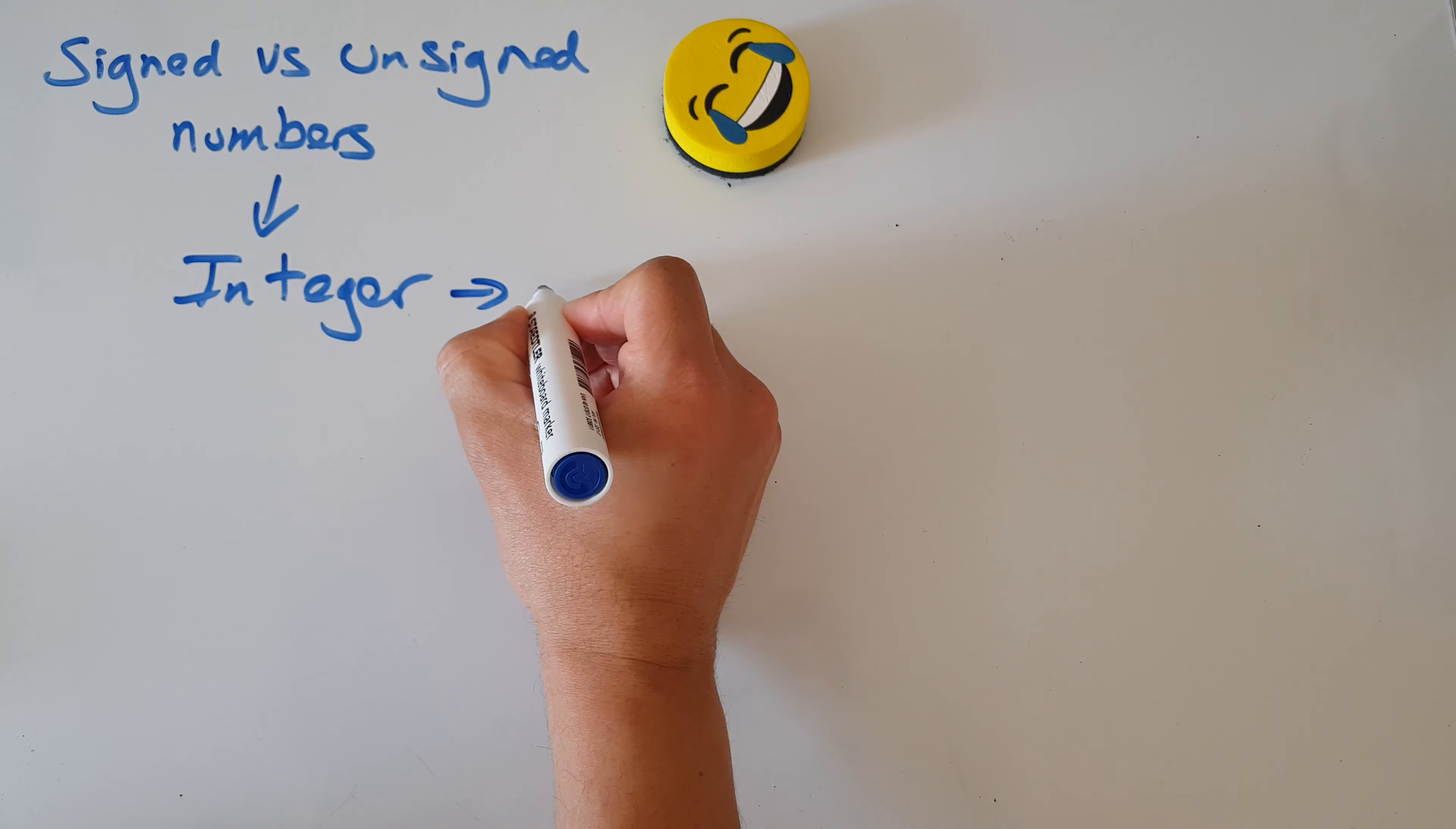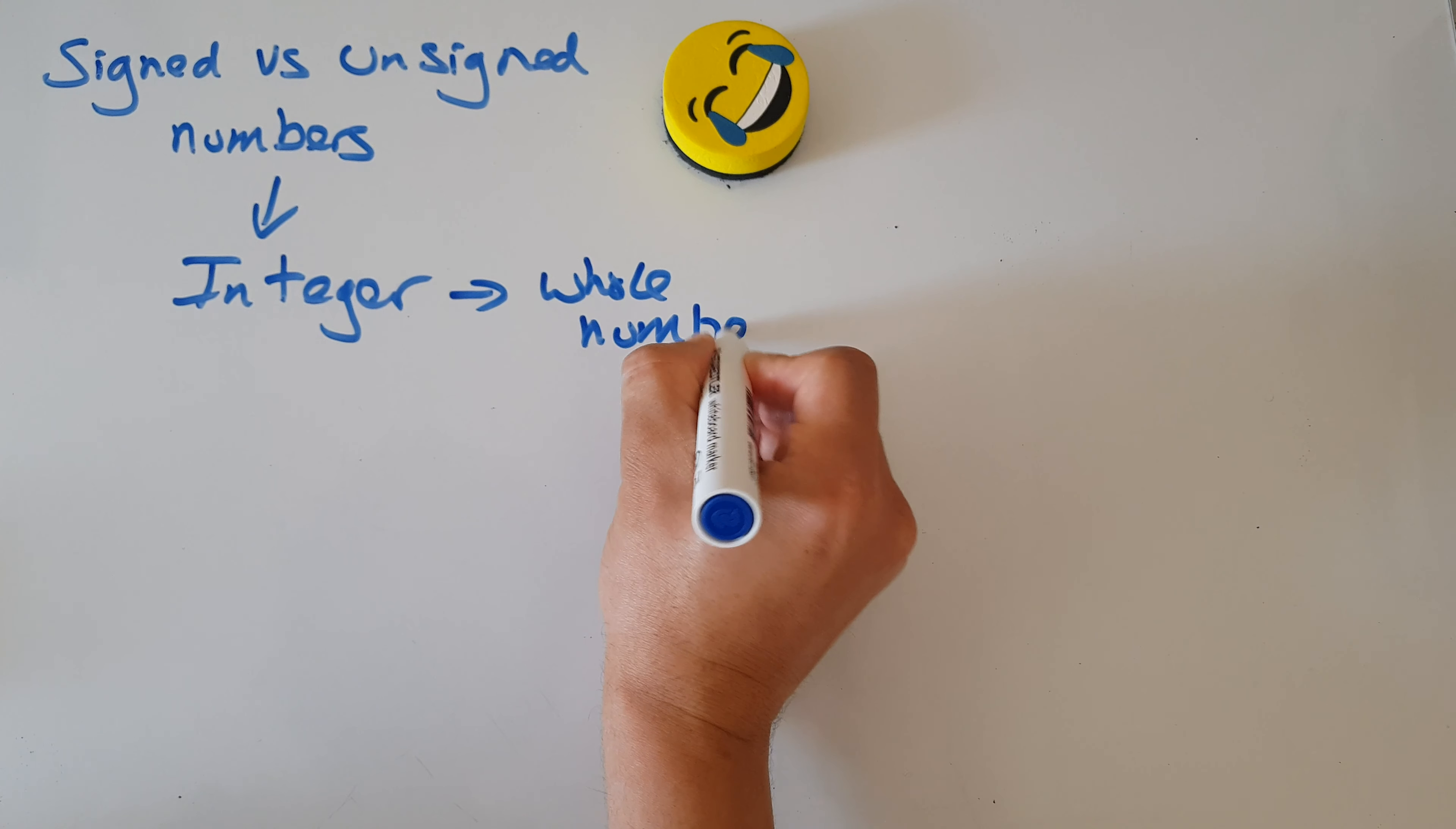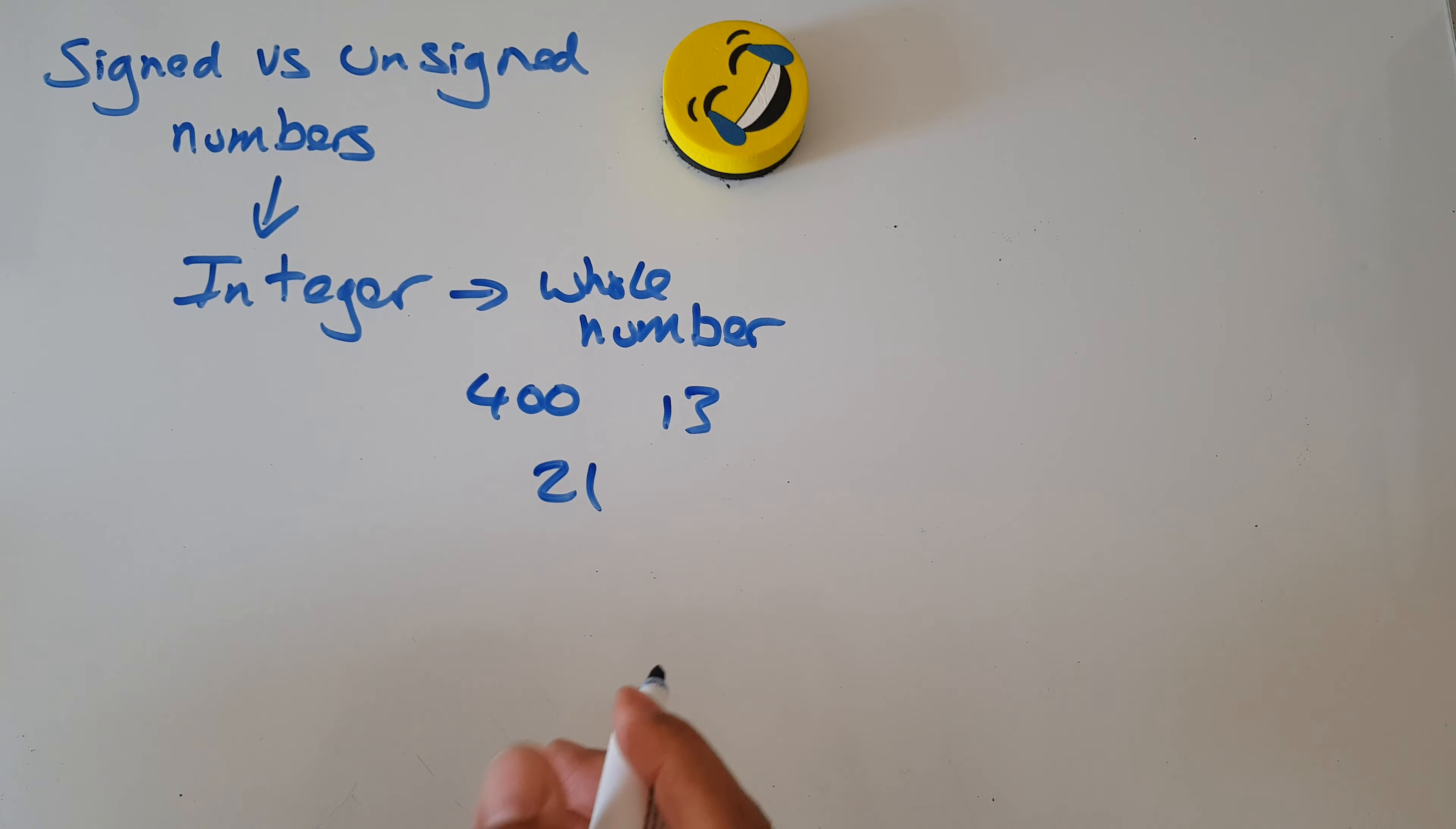Okay, so what's an integer? It's a whole number. What's a whole number? 400, 13, 21 - these are all whole numbers.